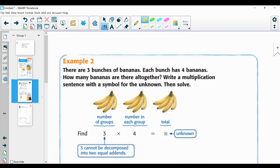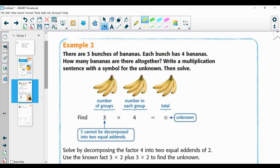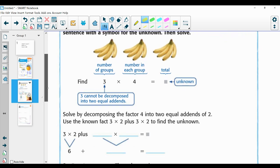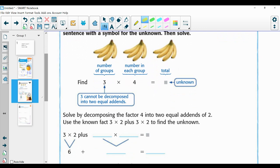So there are some bunches of bananas. Each bunch has some bananas. There are three bunches of bananas. Each bunch has four bananas. How many bananas are there all together? We're going to write a multiplication sentence with a symbol for the unknown, then solve. So first I'm going to find, I have my number of groups, which is three. The number in each group is four. I need the total. That is the unknown.